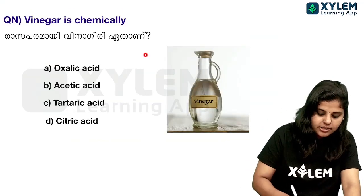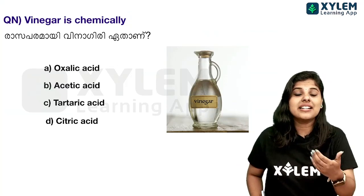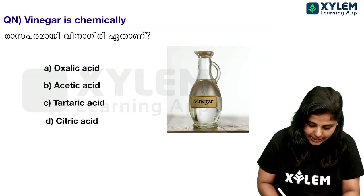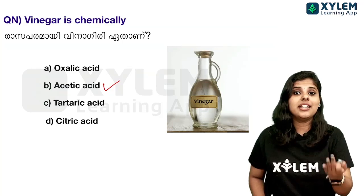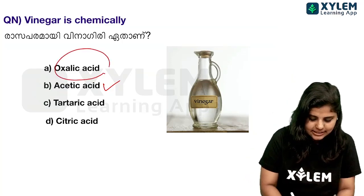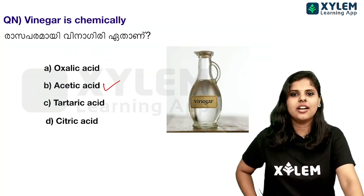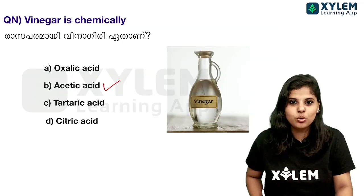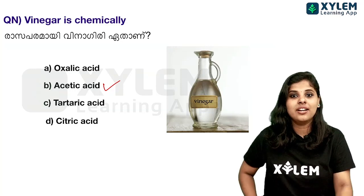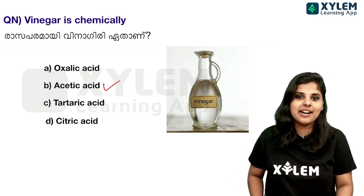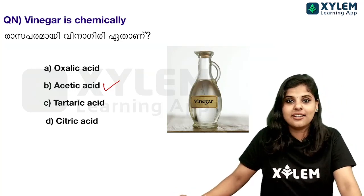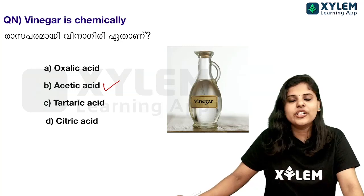Next question: Vinegar is chemically what? The answer is acetic acid. Other natural acids: tomatoes contain oxalic acid, grapes contain tartaric acid, and lemons and citrus fruits contain citric acid.